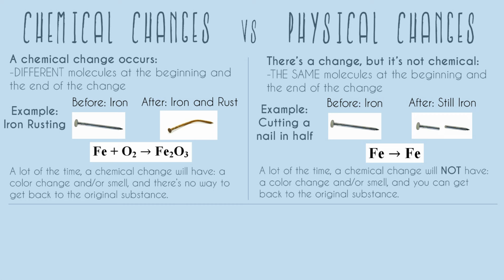So in this example, we see that there's no color change and no smell with just cutting a nail in half. And can we get back to the original substance? Well, it'd certainly be easier. We could weld it back and it would kind of look the same. It's certainly easier to get back to a nail just being glued back together than it is to turn rust back into iron — that's really hard.